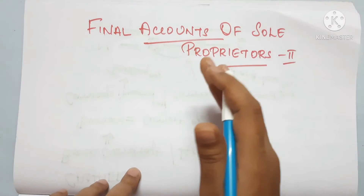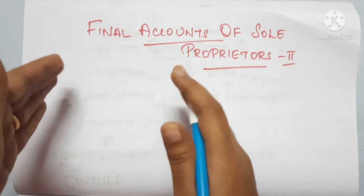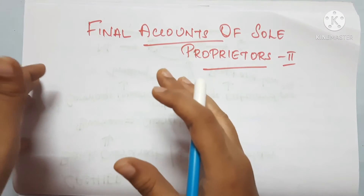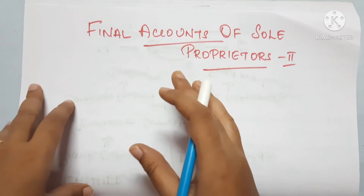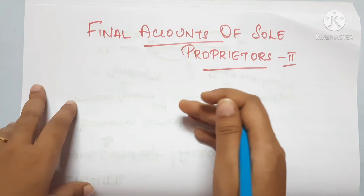If you already know the final accounts, you can understand this easily.